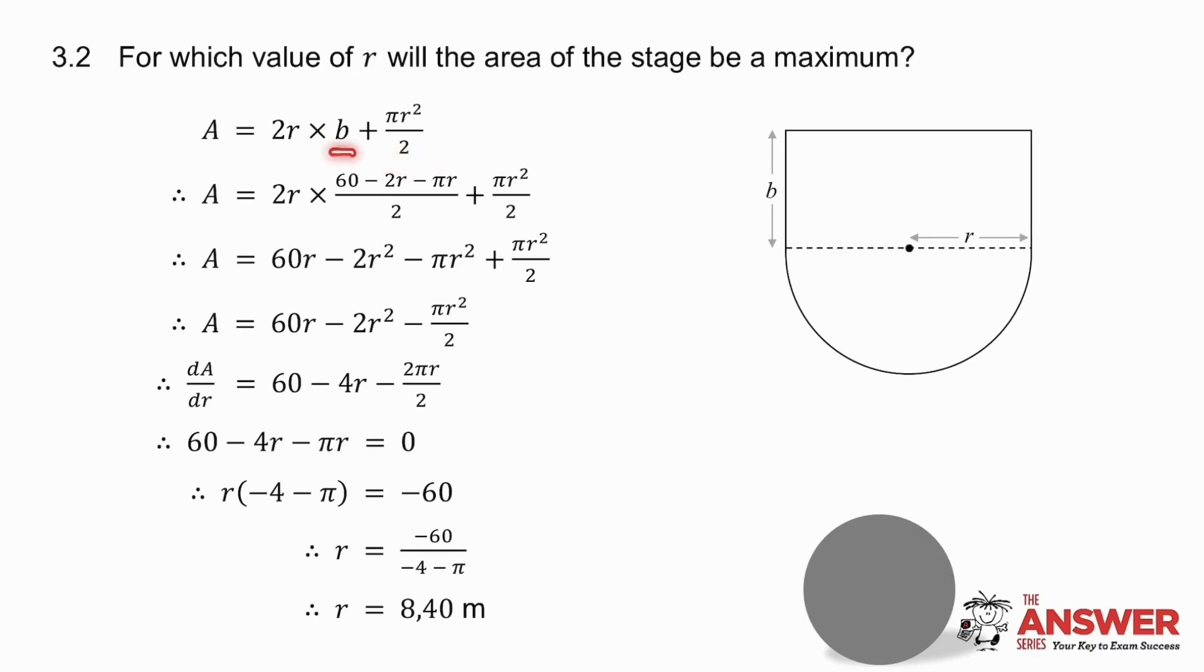I know what b is from the previous question, so I substitute that in and I simplify the expression for the area. How do I get it to be a maximum? I take the derivative and I make it equal to zero, and I solve for r.